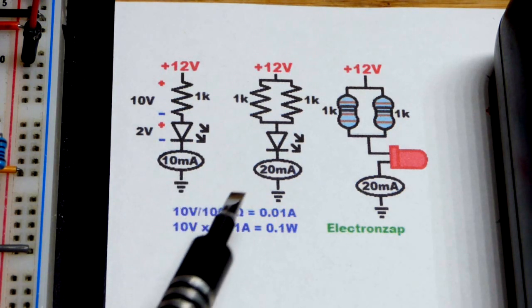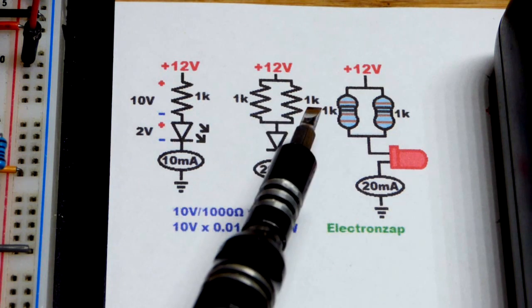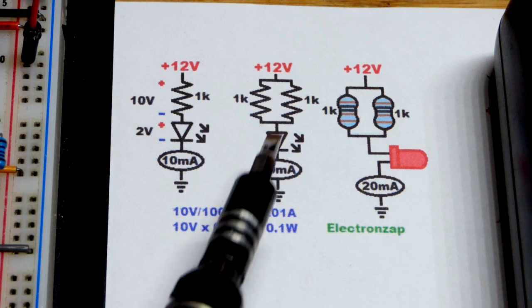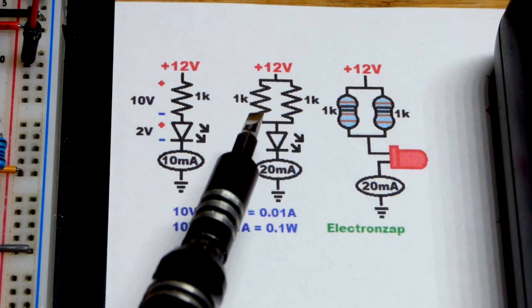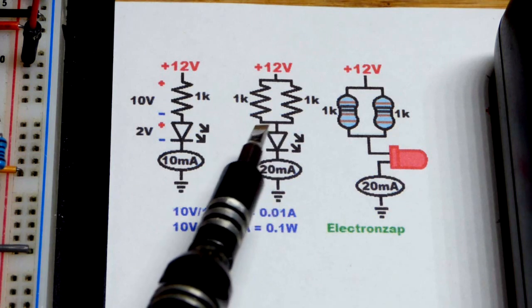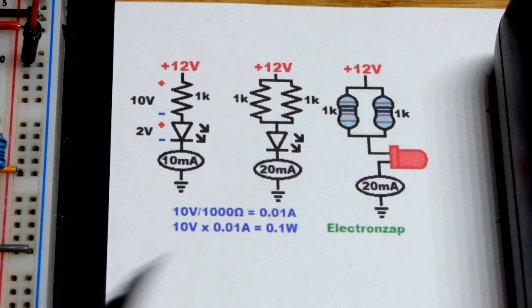So there's a simple solution. If we want to get 20 milliamps of current in this circuit, that's to put another 1 kilo-ohm resistor in parallel with the original one right there. And then each one of them will have 10 volts across them. Each one of them will pass 10 milliamps of current, and both of those currents will pass through the LED.